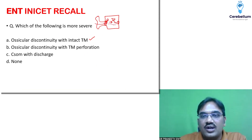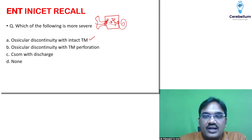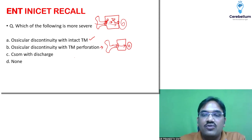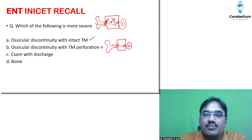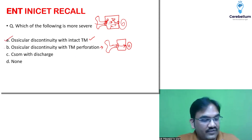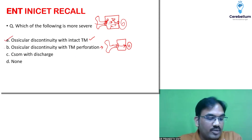The sound waves are not getting transferred towards the cochlear side. Whereas in the other case — perforation is there — so through the perforation the sound waves are entering and striking the medial wall of the middle ear. Somehow some sound waves are entering into the inner ear. But in ossicular discontinuity, that is also not there. So compared to B, A is the one with more hearing loss.